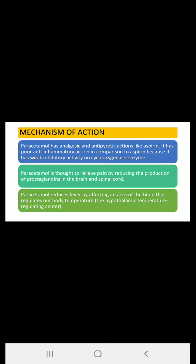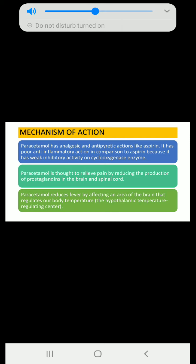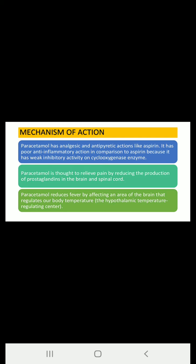Paracetamol reduces fever by affecting an area of the brain that regulates body temperature — the hypothalamic temperature regulating center. Our normal body temperature is 37 ± 2 degrees Celsius, and it is regulated by the hypothalamic temperature regulating center. Paracetamol directly affects that area present in the brain and acts on the hypothalamic temperature regulating center to show its antipyretic effect.